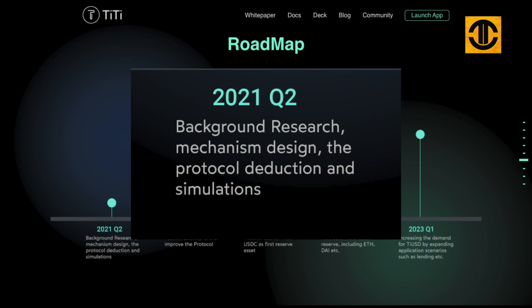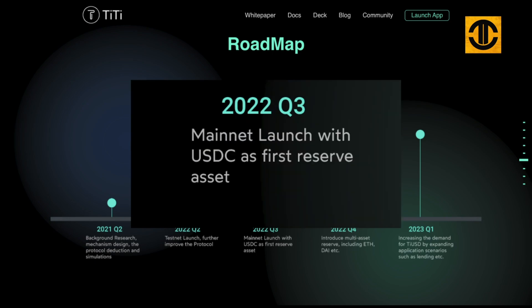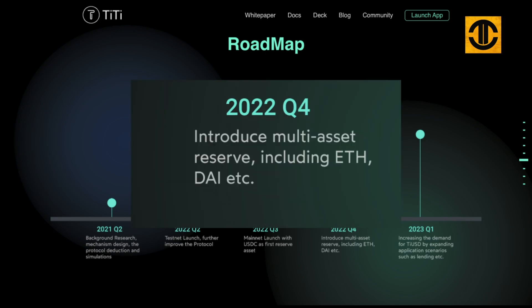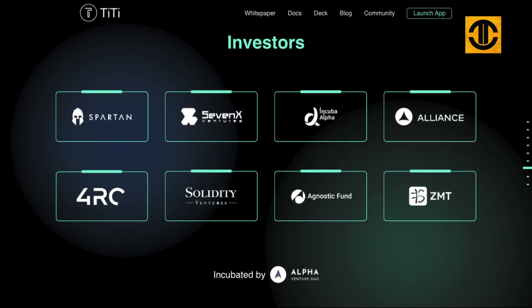The roadmap includes: Q2 2021 — background research, mechanism design, protocol deduction and simulation; Q2 2022 — testnet launch and protocol improvements; Q3 2022 — mainnet launch with USDC as the first reserve asset; Q4 2022 — introduction of multi-asset reserves including ETH, DAI, and more; Q1 2023 — increasing demand for T-USD by expanding application scenarios such as lending and many more.